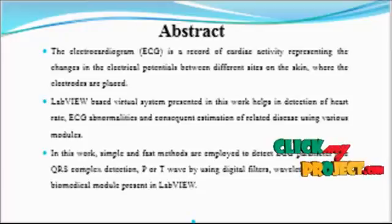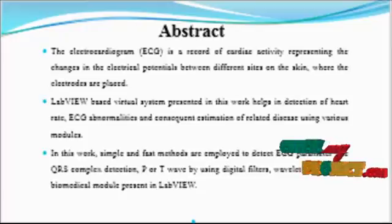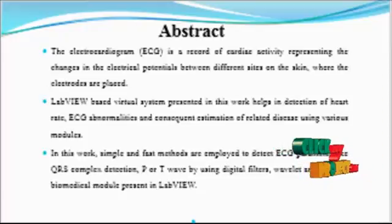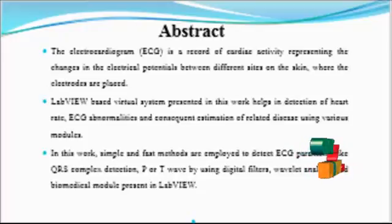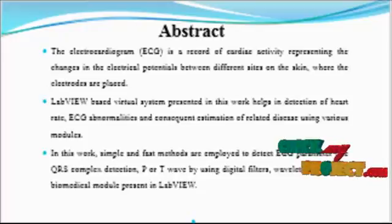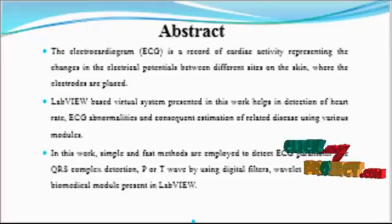ECG signals show the electrical activity of the myocardium. They appear as a periodic signal. Generally, the ECG cycle is labeled utilizing the letters P, Q, R, S, and T — sometimes individual peaks of the whole cycle waveform. The R peak is always positive as shown on the waveform.